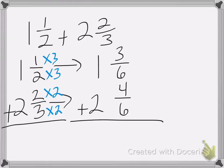We add them together, so 3/6 plus 4/6 is 7/6, 1 plus 2 is 3. Now, again, I'm not finished because 3 and 7/6 is not in the correct ending form. 7/6 is improper.